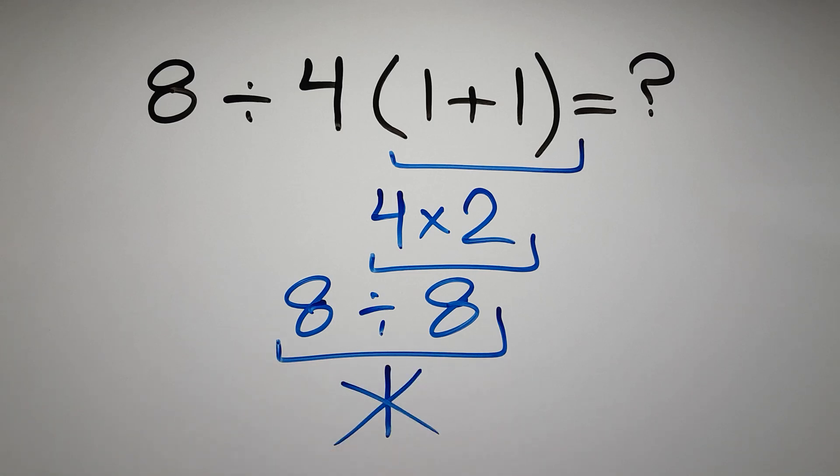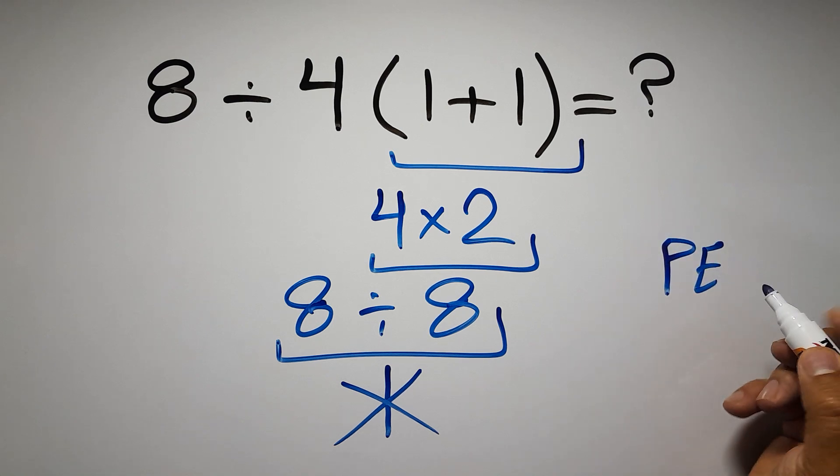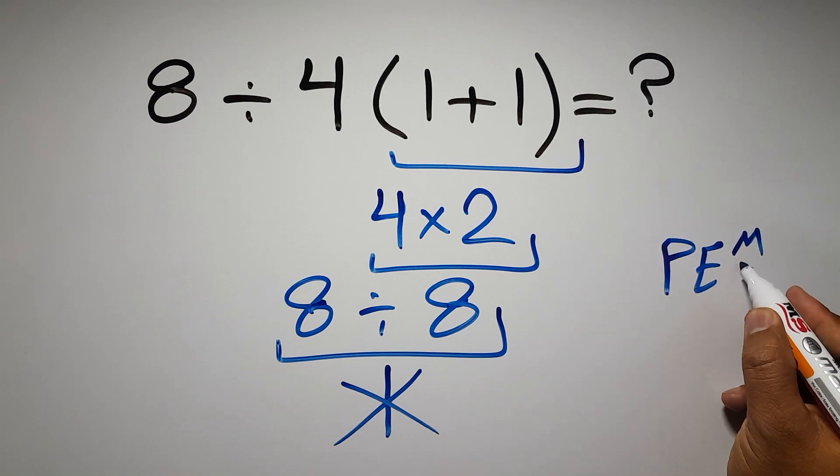But this answer is not correct, because according to the order of operations, first we have to do parentheses, then exponent, then multiplication and division.